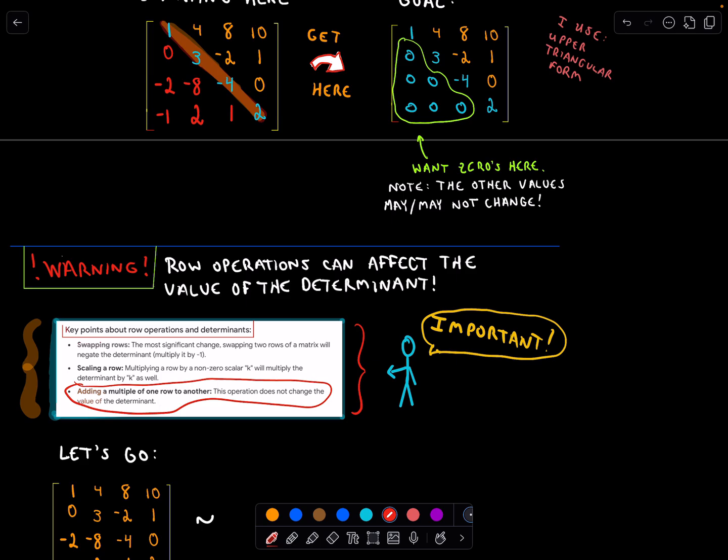If you add a multiple of one row to another, that's not going to change the value of the determinant. However, if you swap two rows, it's going to change the sign of the determinant, and if you scale a row, it's going to multiply the determinant by that non-zero constant as well.